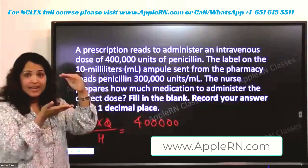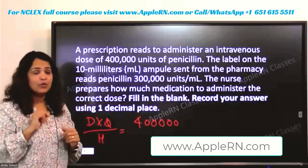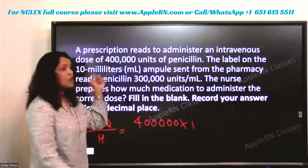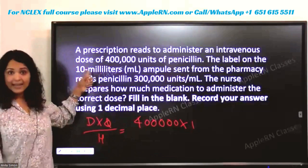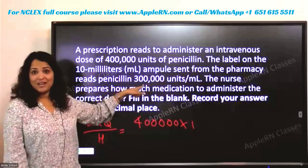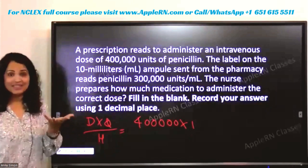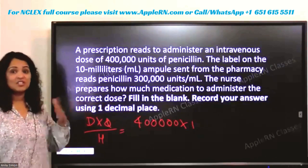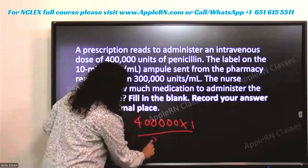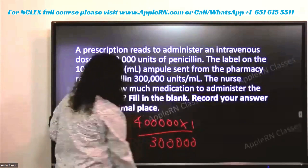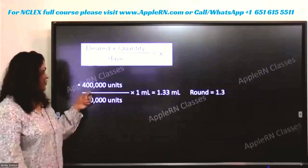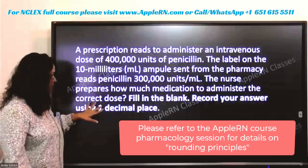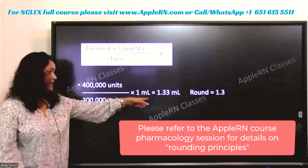In one ml of that 10 ml ampule, one ml equals 300,000. So the quantity you are going to put here is 1, not 10. If you put 10, it will be 300,000 times 10 — that's not what you have. You have to put 1, not 10. If you put 10 you will get the answer wrong. So: 400,000 desired, quantity 1 ml, and have is 300,000.